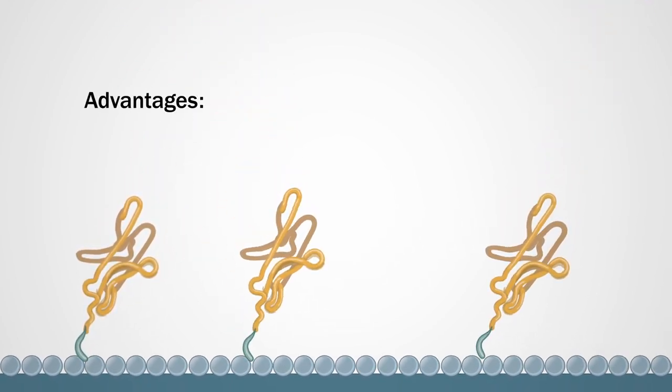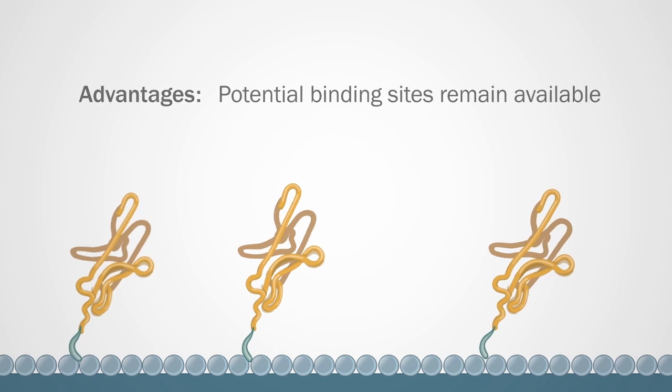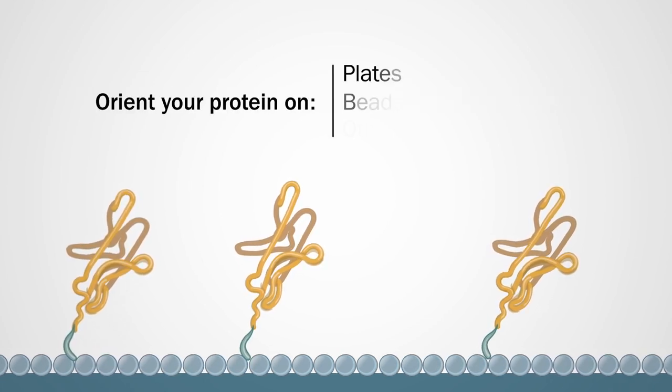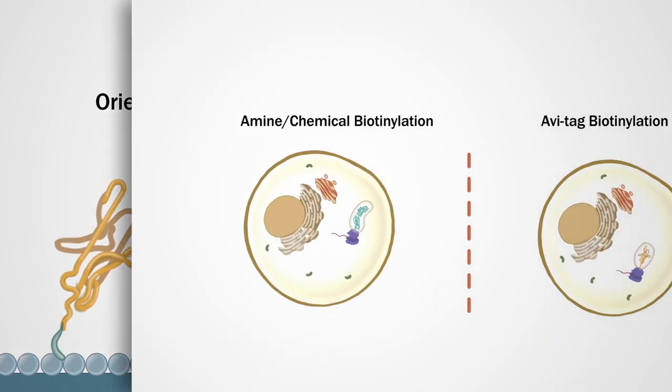Advantages of controlled biotinylation: Potential binding sites remain available. Specifically orient your protein on plates, beads, and other selected surfaces.